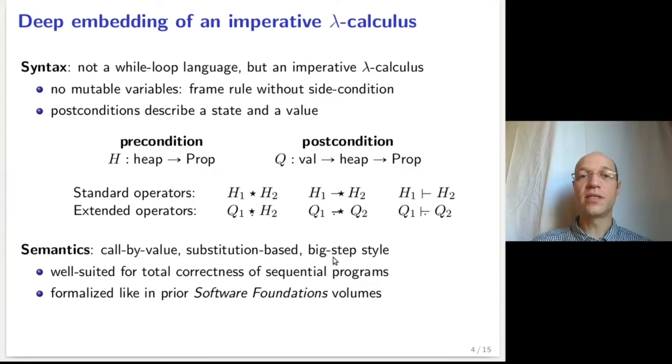The semantics is described in the standard way as a call-by-value, substitution-based, big-step style semantics. The choice of a big-step semantics is well suited for reasoning about total correctness of sequential programs. It makes the proof simpler. Both the syntax and the semantics are described in standard ways, following the style of the presentation of the prior Software Foundation volumes, which will make it easy for students to follow.